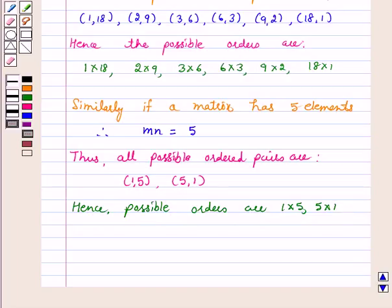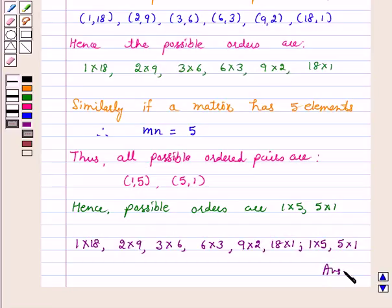If a matrix has 18 elements, the possible orders are 1 by 18, 2 by 9, 3 by 6, 6 by 3, 9 by 2, and 18 by 1. And if a matrix has 5 elements, the possible orders are 1 by 5 and 5 by 1. I hope you have enjoyed the session.